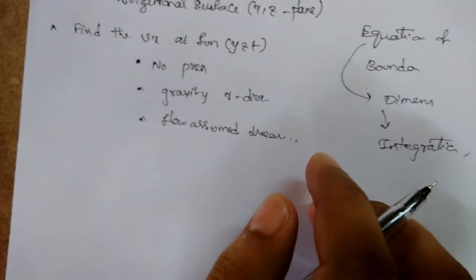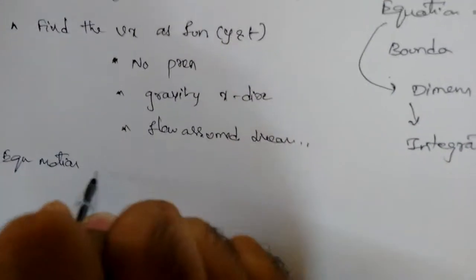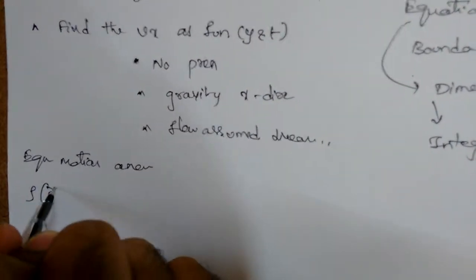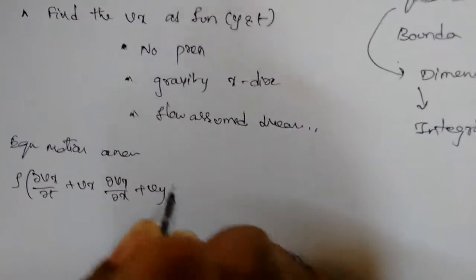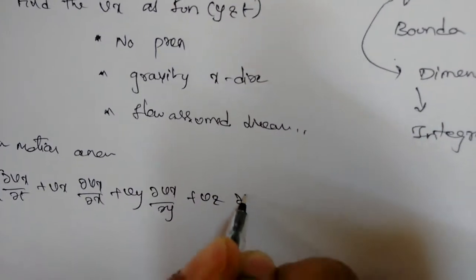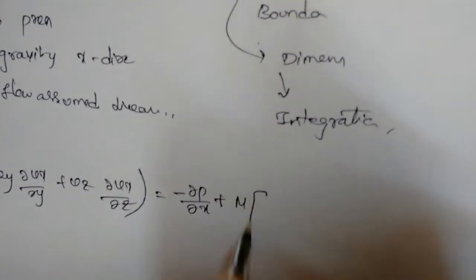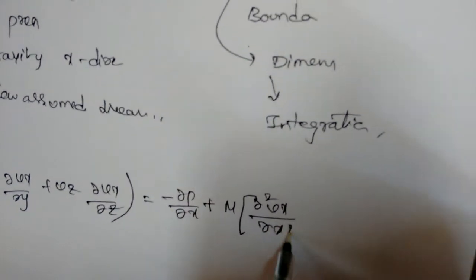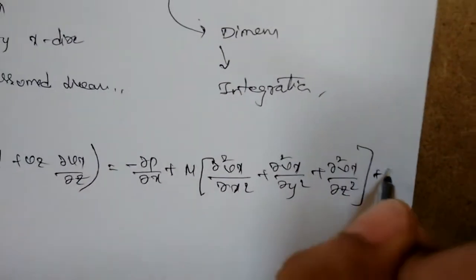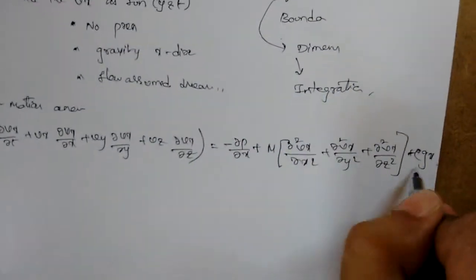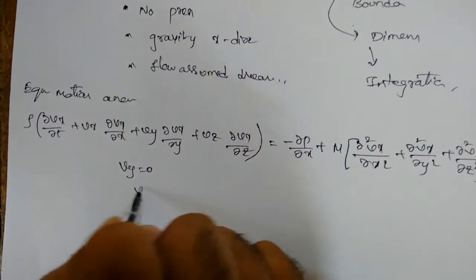We write the equation of motion for a Newtonian fluid. The x-component is: ρ(∂vx/∂t + vx ∂vx/∂x + vy ∂vx/∂y + vz ∂vx/∂z) = μ(∂²vx/∂x² + ∂²vx/∂y² + ∂²vx/∂z²) + ρgx. Gravitational force cancels, and vy and vz are both zero.